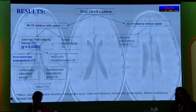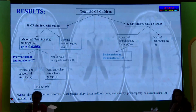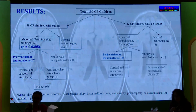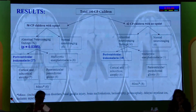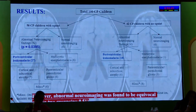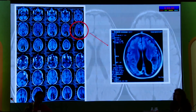Similarly, we distributed the children with no squint into abnormal neuroimaging findings: 36 patients had abnormal neuroimaging findings, which were further characterized. The most common neuroimaging finding in children with CP was periventricular leukomalacia in both groups — CP with squint and without squint. However, abnormal neuroimaging was found to be equivocal between the two groups. This MRI of a child shows periventricular leukomalacia around the ventricles, with decreased white matter and enlargement of the ventricles — a classic PVL finding on MRI.